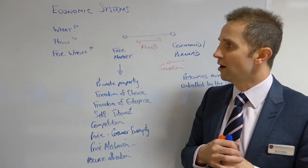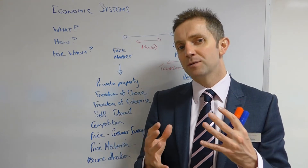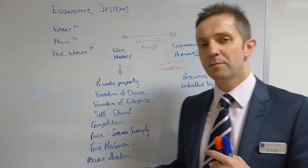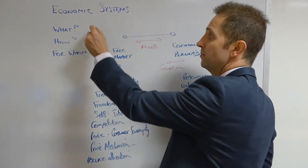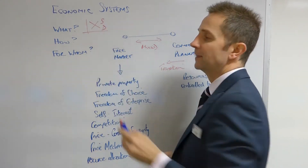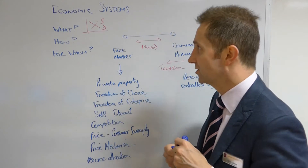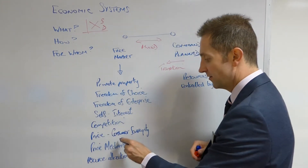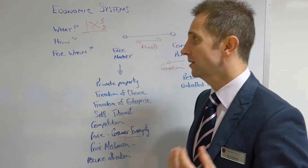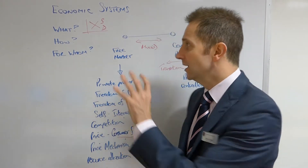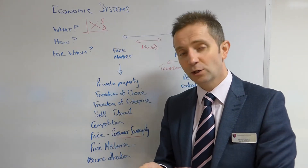Let's consider the market economy: what goods are produced and in what quantities? That is all determined by the market mechanism or the price mechanism, which is our simple demand and supply diagram. It is the interaction of demand and supply which determines which goods are produced and in what quantities. We also talk about the fact that the consumer is sovereign — the consumer has control over resources, because when the consumer increases demand in a free market system, more resources are allocated to that product, and hence output goes up as a consequence.